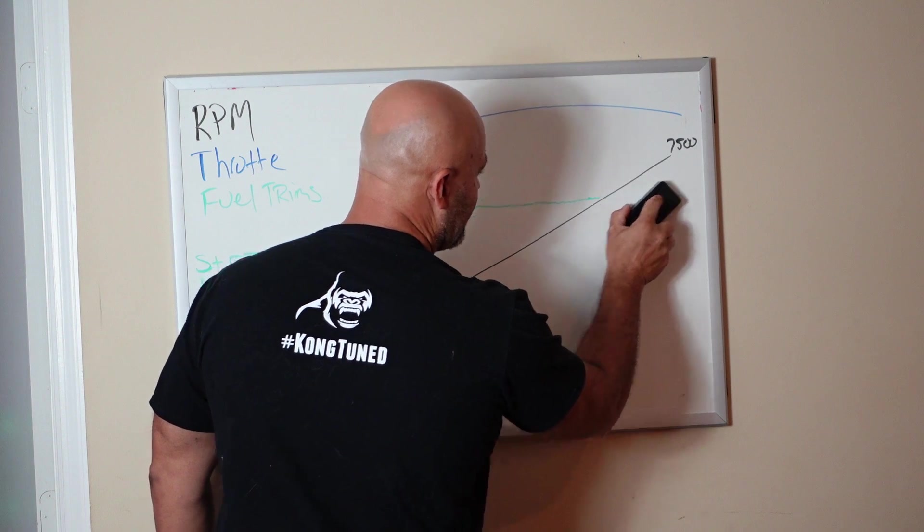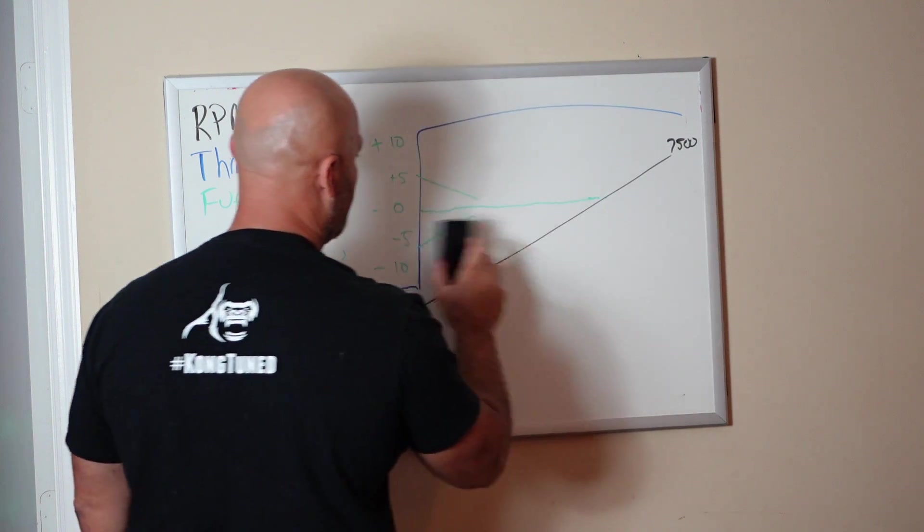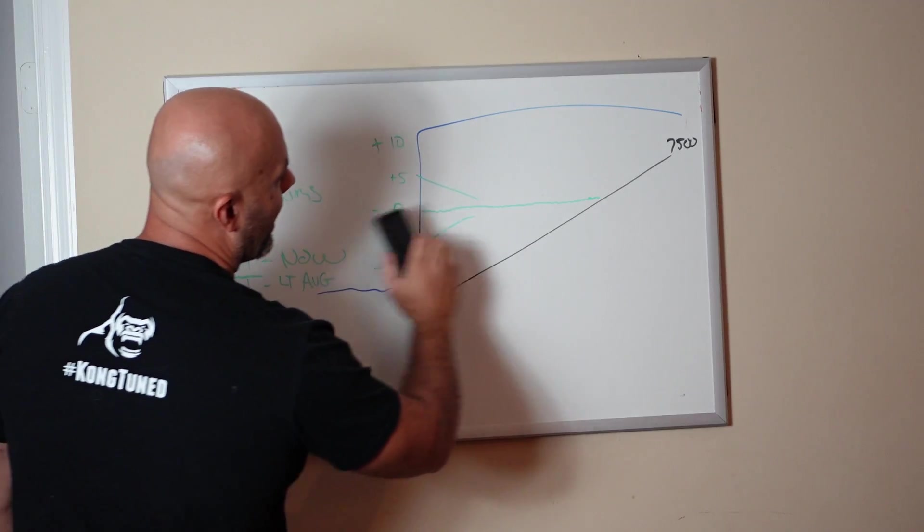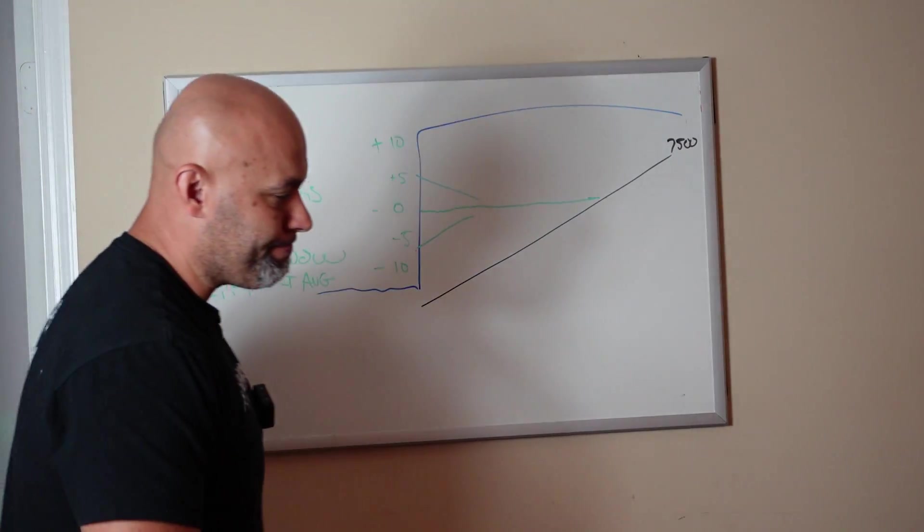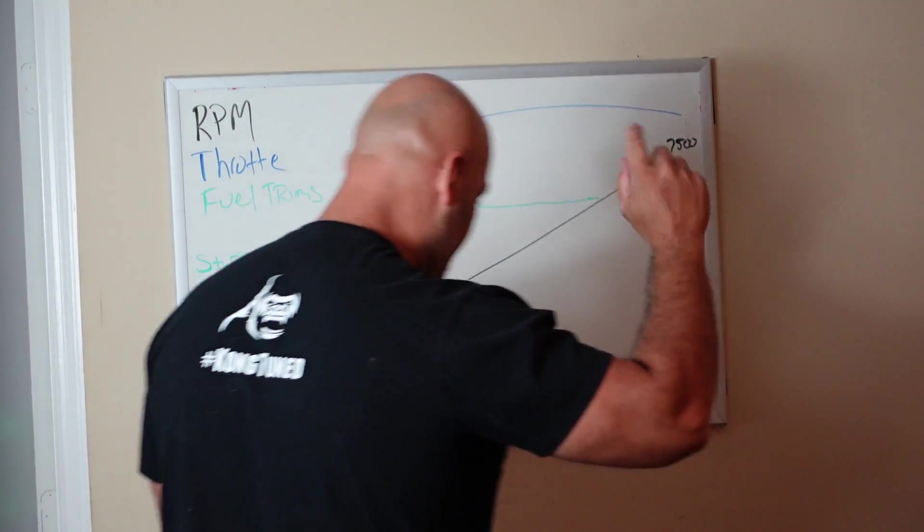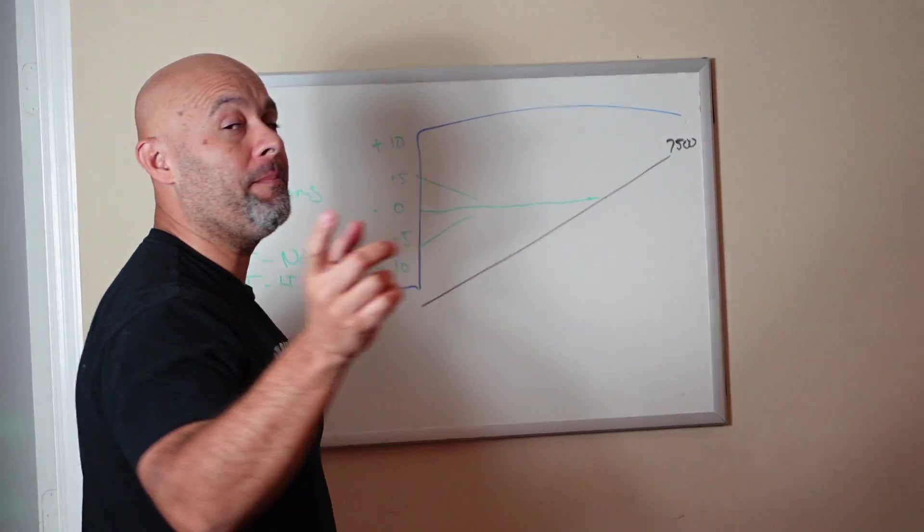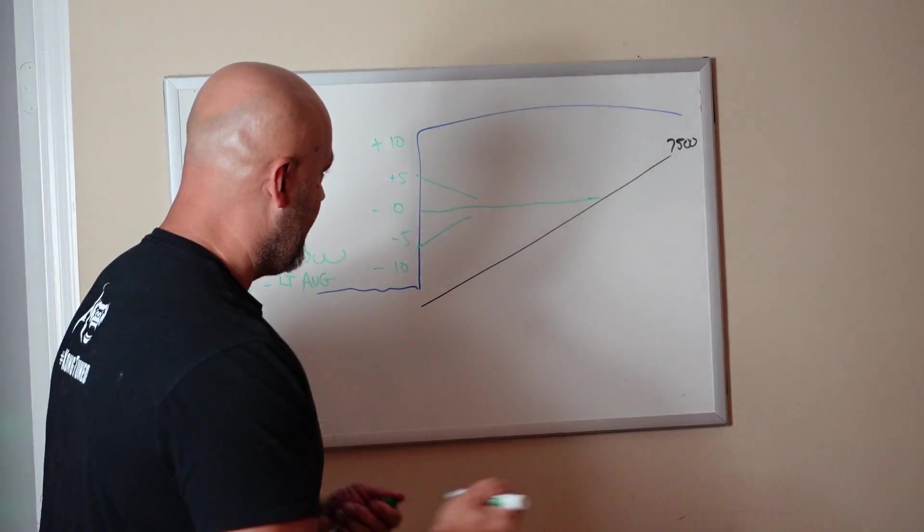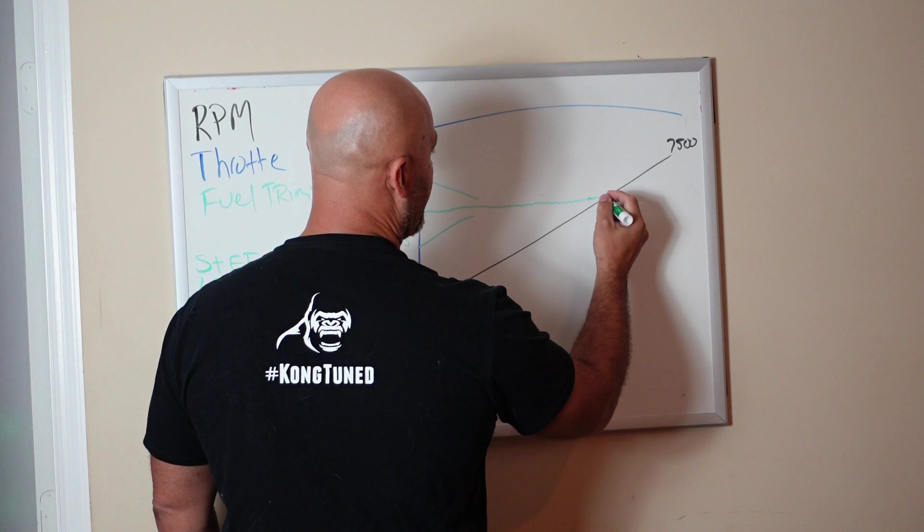Let's say now we are boosted. Same thing, boosted or NA, I want to be within 5%. But let's say you have a boosted setup on pump gas and a booster pump, and your fuel trims start to do this with RPM.